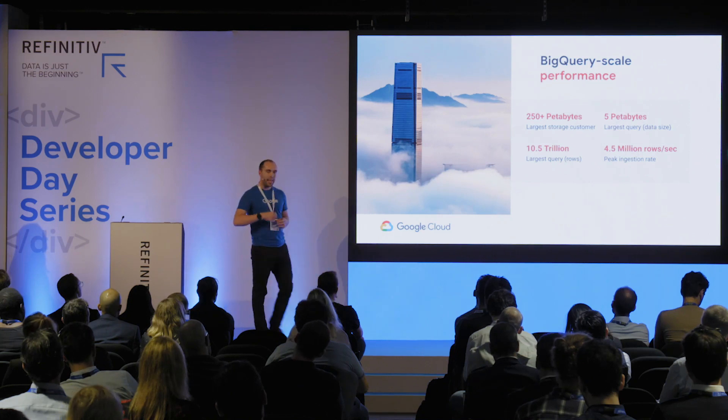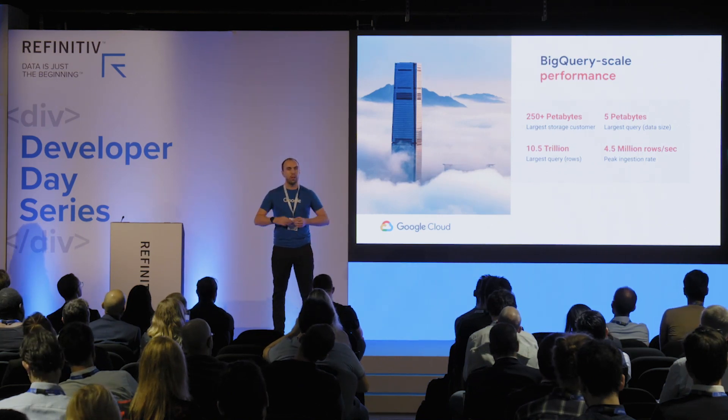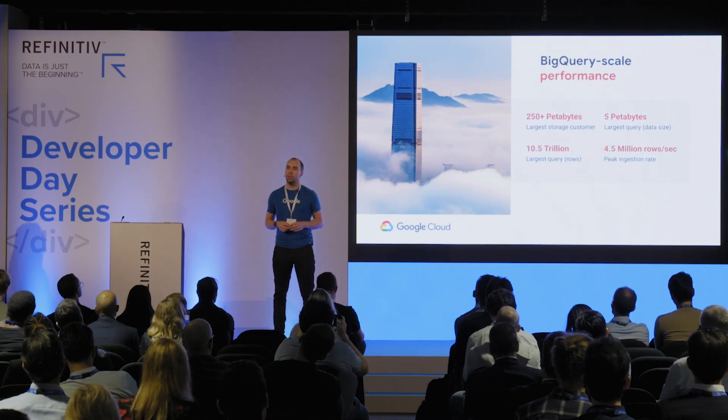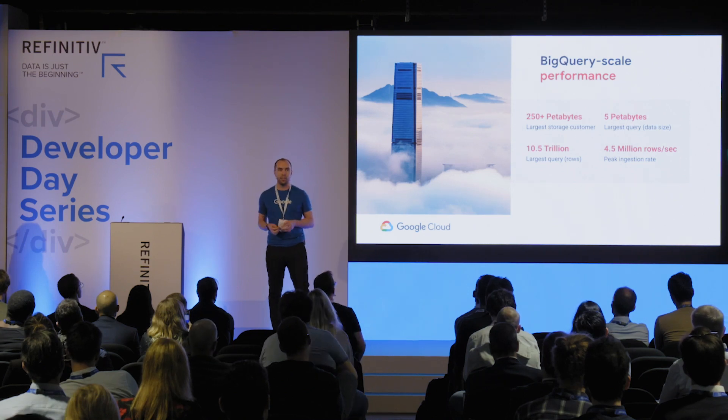Looking at some interesting numbers for the cloud version of BigQuery: one of our larger customers stores 250 petabytes of information. Storage cost is very cheap and we charge per query when you access data — exactly the model we see with Refinitiv tick history, where customers simply pay per query. The largest single query we know of scanned five petabytes — a single query touching 10.5 trillion rows of data. And our fastest customer ingests about 4.5 million rows per second. There are thousands of customers doing this today, the biggest being Google itself.